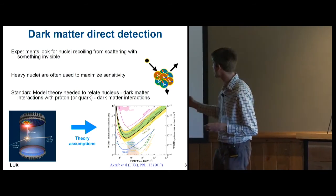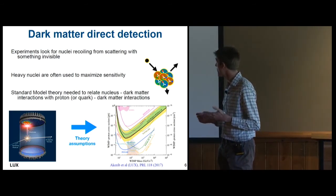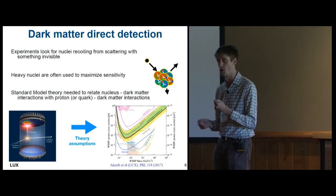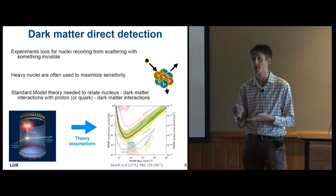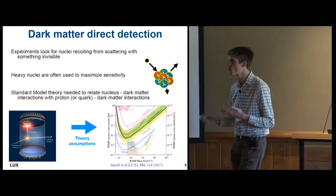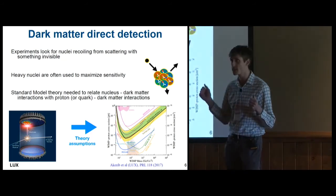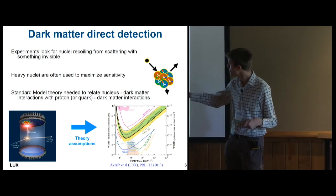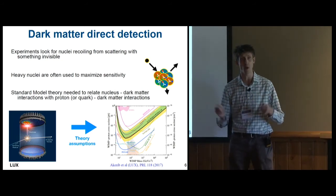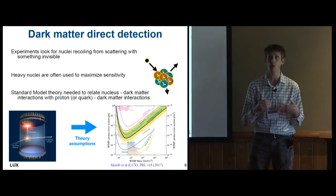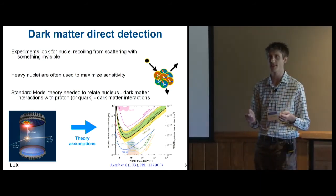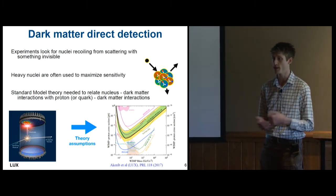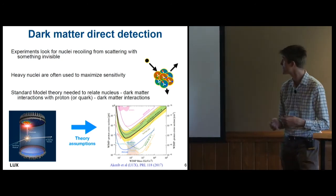And so what we get out of these are exclusion plots telling us that the interaction strength or cross section of a dark matter particle on a nucleus must be smaller than some threshold that they'd be able to measure. And what's really done to be able to compare different experiments using different nuclei, and they all like to use heavy nuclei for sensitivity, is to use some sort of nuclear theory to relate the WIMP nucleus cross section to the WIMP nucleon cross section. At most basic, this is just assuming an impulse approximation that you scatter coherently off all the nucleons in the nucleus and it just sort of adds up.